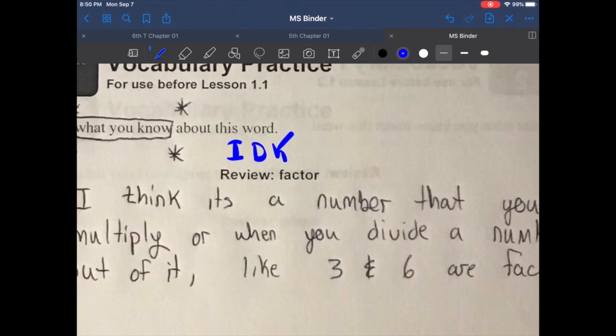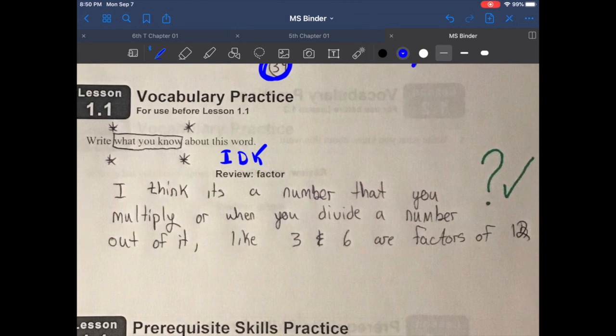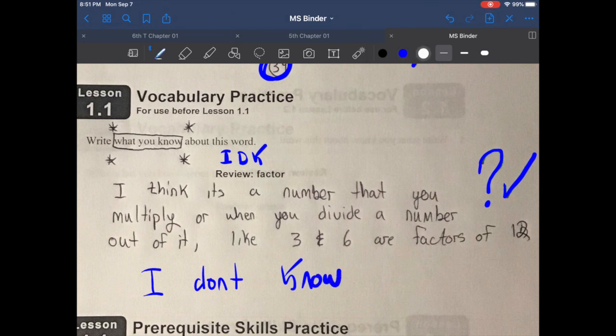So review. What is a factor? I think it's a number that you multiply or when you divide a number out of it, like three and six are factors of 12. I tried my best to write what I understood about this word. Did I show my work? Here's my question mark again. Yes, I did. I did not just write a few words like I don't know. This will not get you points.